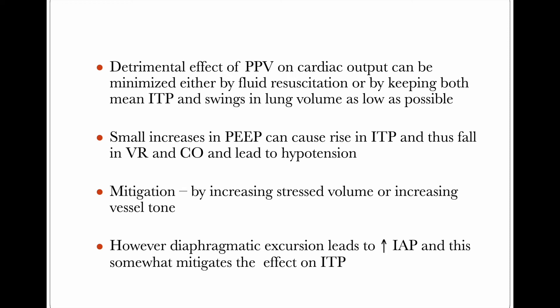Low tidal volume ventilation will also help in minimizing BP fluctuations. Small increases in PEEP can cause a rise in intrathoracic pressure. Higher PEEP during expiration will cause higher intrathoracic pressure and thus a fall in venous return, cardiac output, and lead to hypotension. This can be mitigated by increasing stressed volume — giving more fluid to the patient to increase venous return — or by increasing vessel tone using inotropes and vasopressors to increase blood pressure.